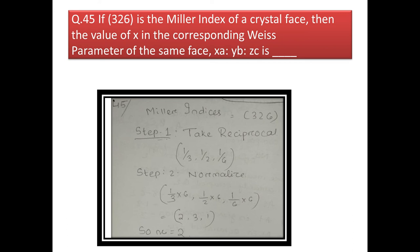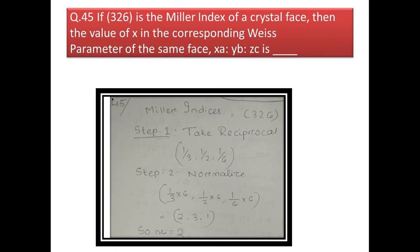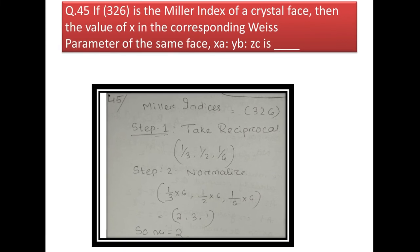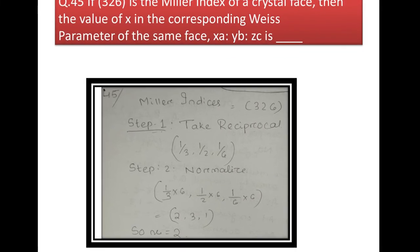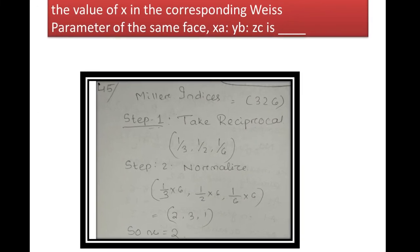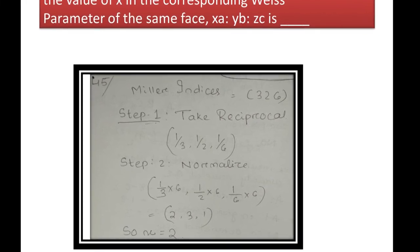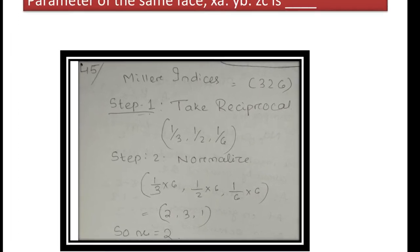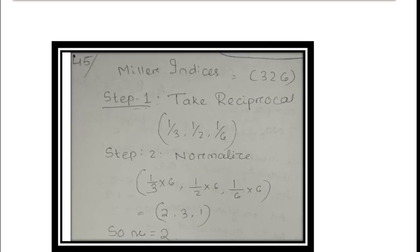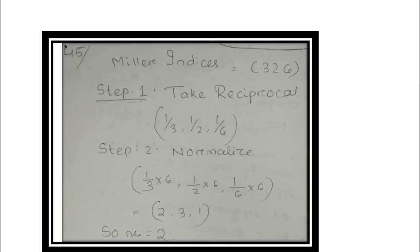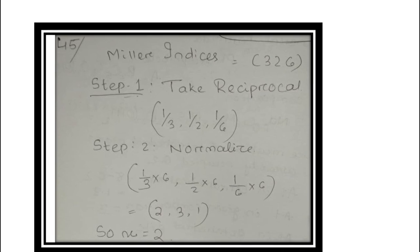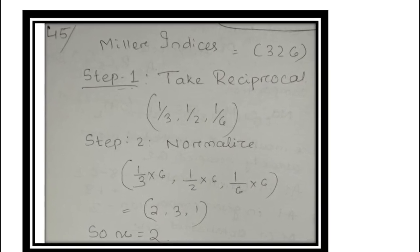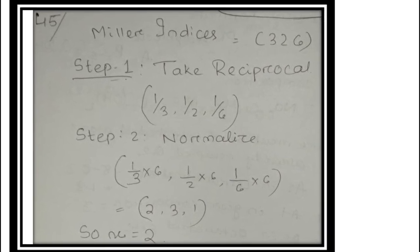Next question: if (3, 2, 6) is the Miller index of a crystal face, find the value of x in the corresponding Weiss parameters Xa:Yb:Zc. The first step is to take the reciprocals of all Miller indices: 1/3, 1/2, and 1/6. Since they are fractions, we normalize by taking the LCM of all denominators (LCM of 3, 2, and 6 is 6) and multiply: the result is 2, 3, and 1. The value of x is 2.